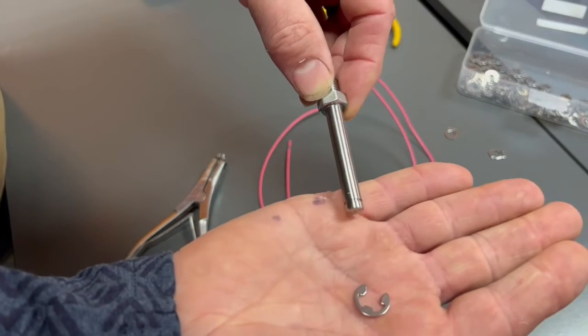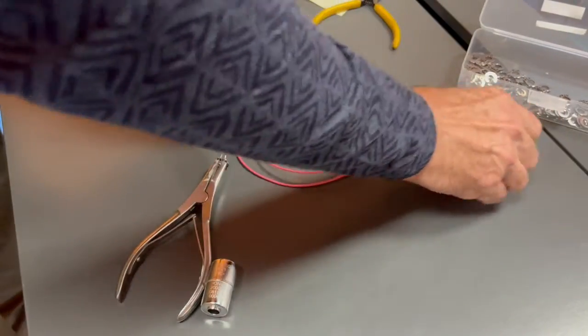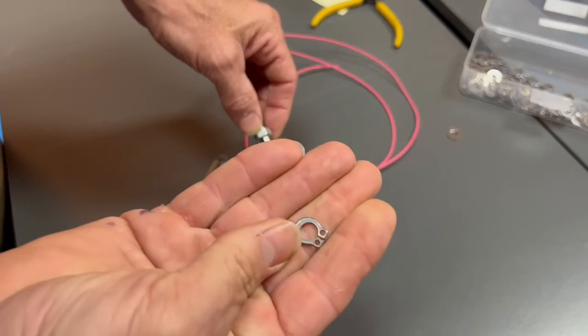An E-clip like that. If there's no groove, then we'll use a compression or a spring clip like this.